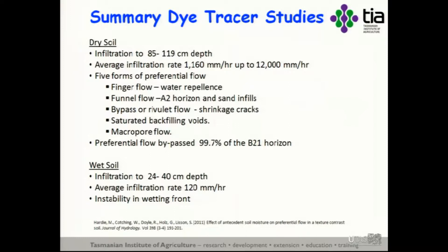Quick summary. In dry soil, we infiltrated to 80 to 120 centimetres. The infiltration rates — actually wetting front velocities — were up to 12,000 millimetres per hour. There were five different forms of finger flow, and preferential flow bypassed as much as 99.7% of the upper B horizon. When it was wet, we only infiltrated to 20 to 40 centimetres depth. The infiltration rate was over 120 millimetres per hour — still fast — and instability developed in the wetting front.